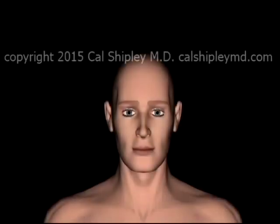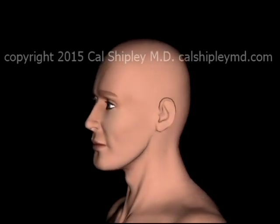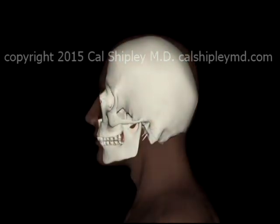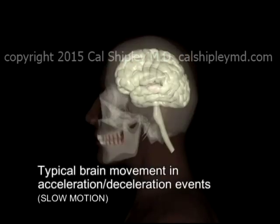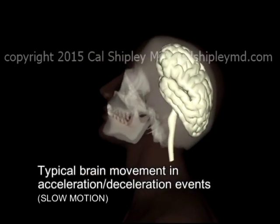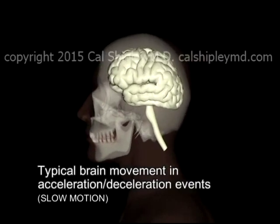Diffuse axonal injury is a potentially severe form of traumatic brain injury and results from sudden changes in velocity of the head. The brain motion underlying diffuse axonal injury is rotational, also referred to as angular, as depicted here.